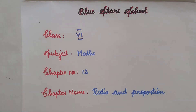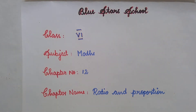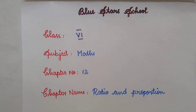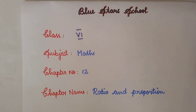Welcome Blue Star School students. Today we are going to see Chapter 12, Ratio and Proportion, in the Sixth Maths NCERT book. Last video we saw Exercise 12.1, which was related to ratio. Now today we are going to see Exercise 12.2, which is based on proportion. Let's see in detail.